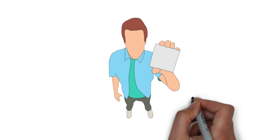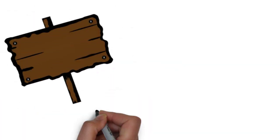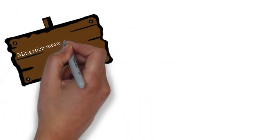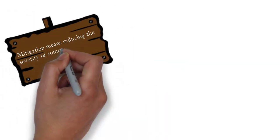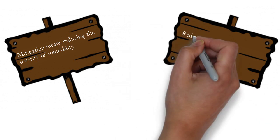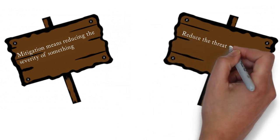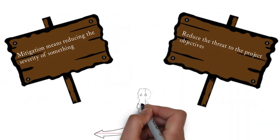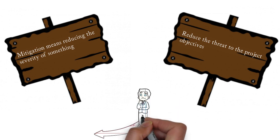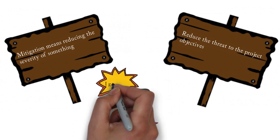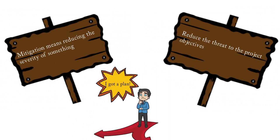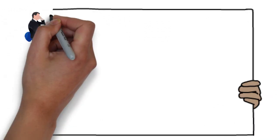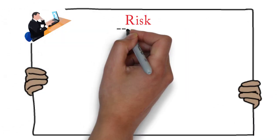Now we will see mitigation. Mitigation means reducing the severity of something, or reducing the threat to the project objectives. A good tester should foresee the risk and have a plan to mitigate risks that can happen in the future. Now we will see the mitigation plan for each of the risks discussed earlier.